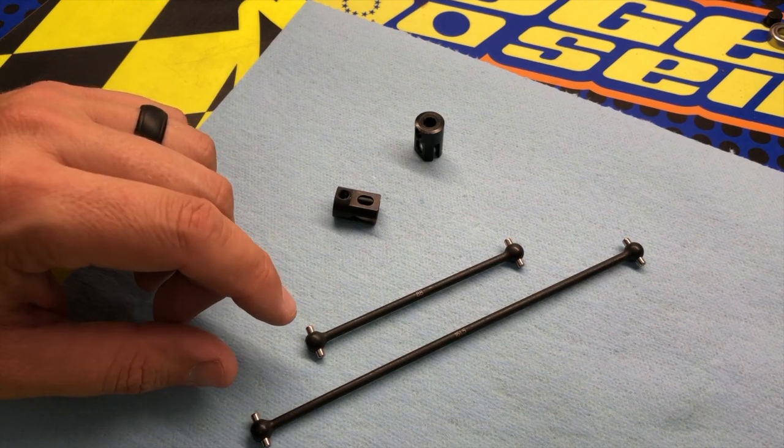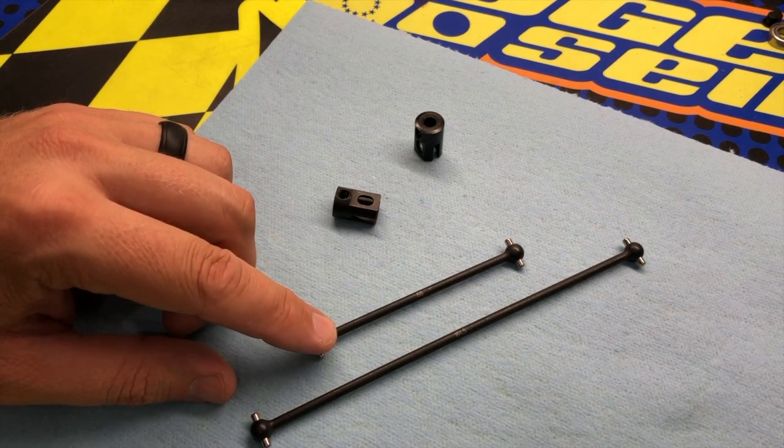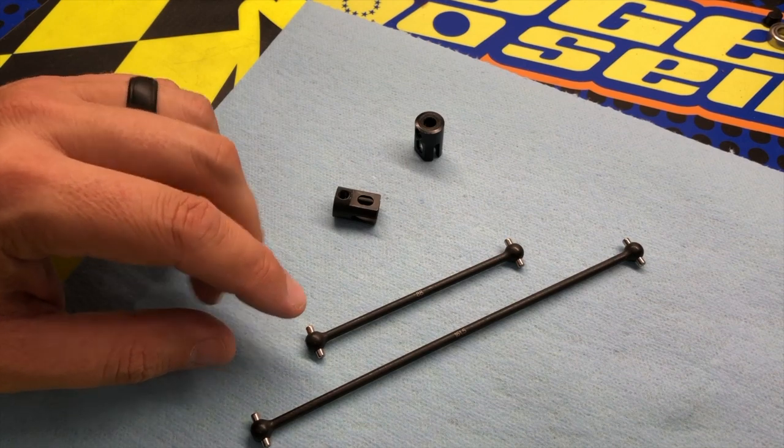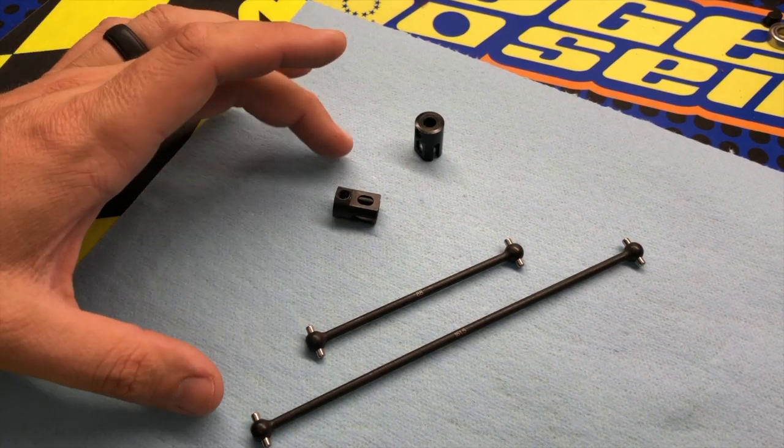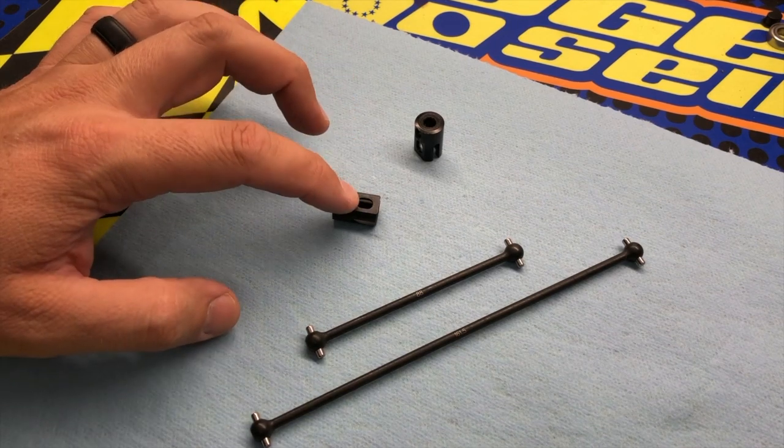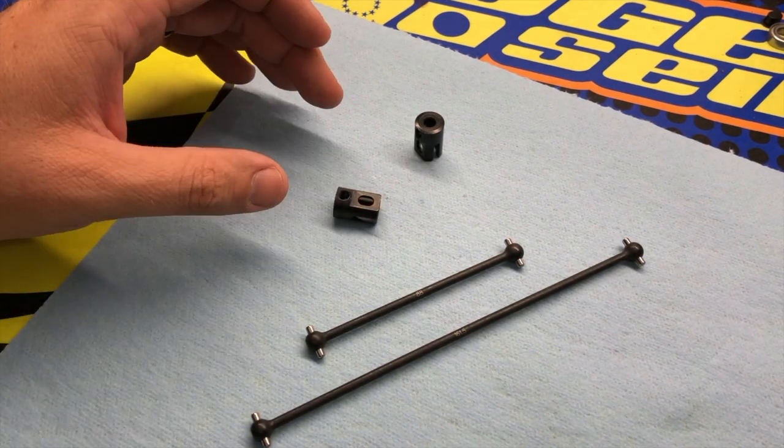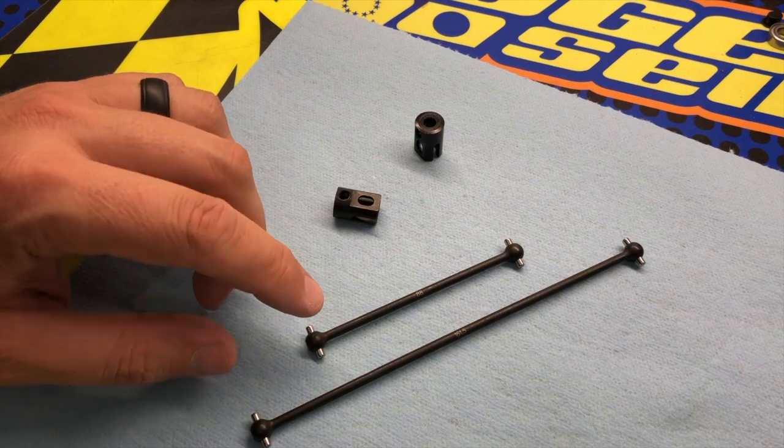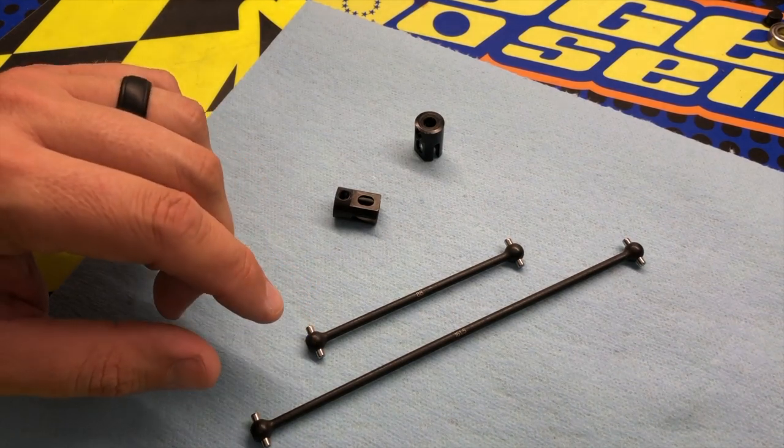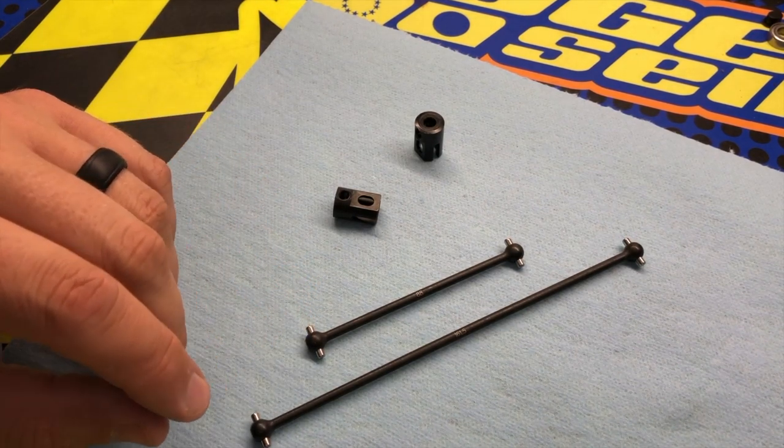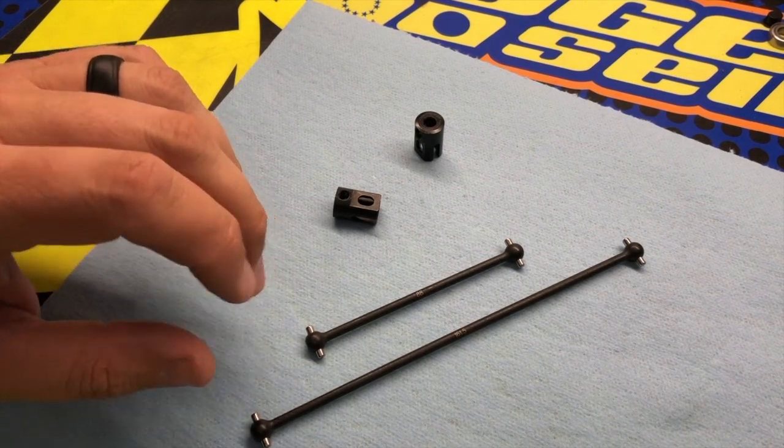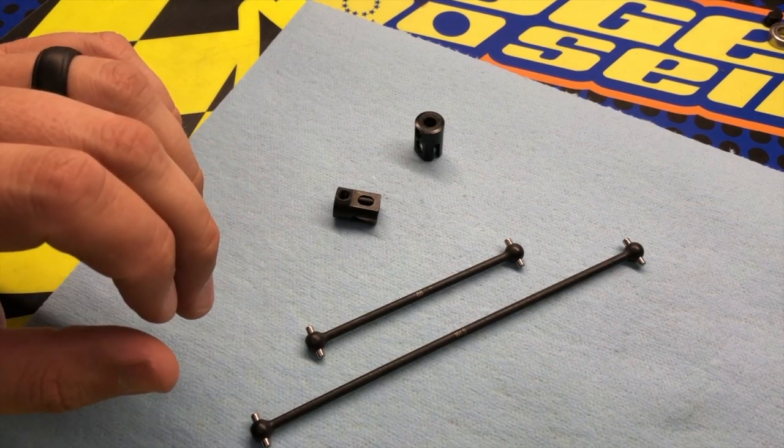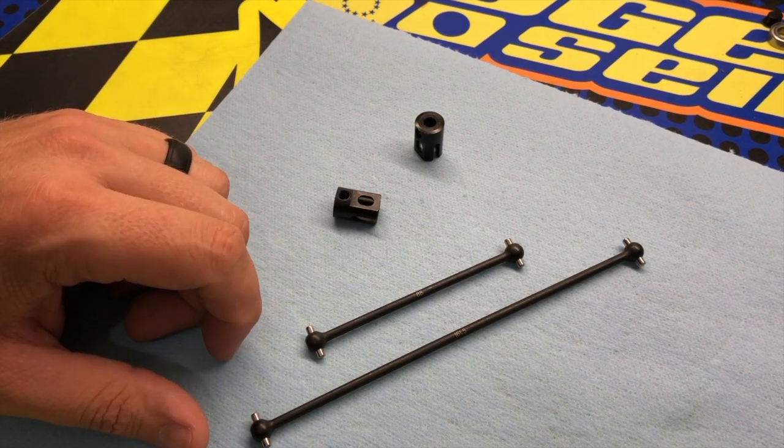One of the reasons why this will help give more traction is because with the reduced friction between the center diff out drives and the front and rear out drives, because there's less friction, it'll allow the center diff to actually bleed a little bit more power and help put the power to the ground, which ultimately will create more traction for your vehicle.